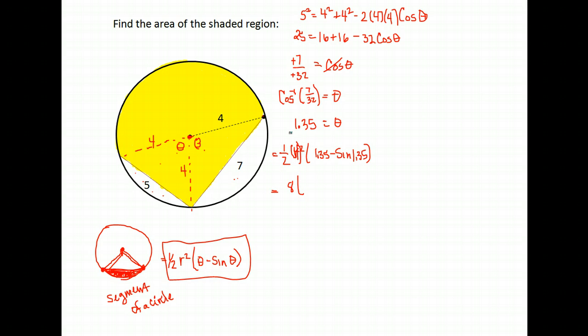Eight times 1.35 minus the sine of 1.35, which I'm going to leave in my calculator, but it's about 0.3742766.